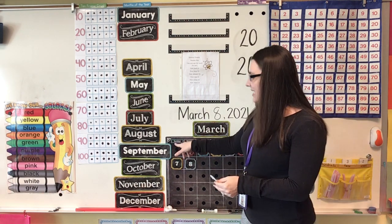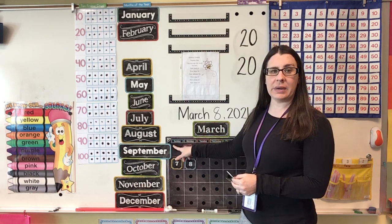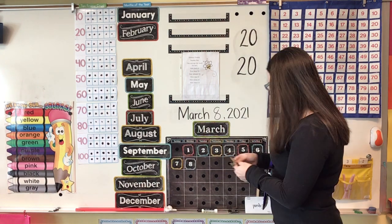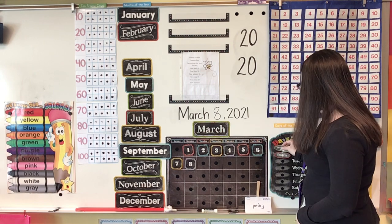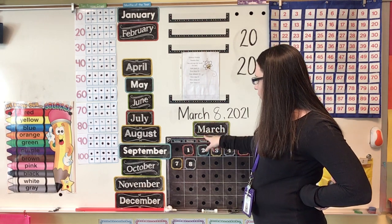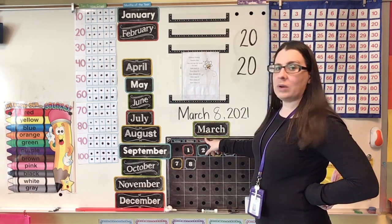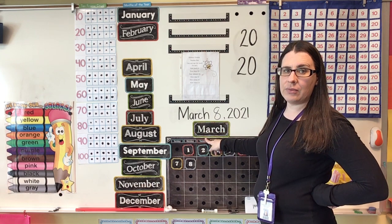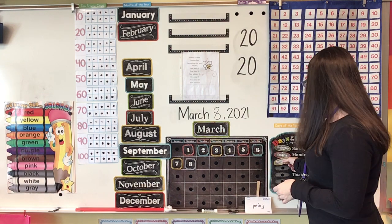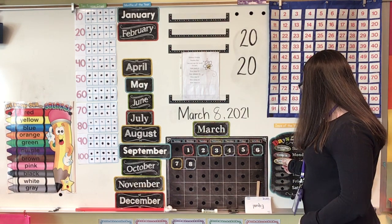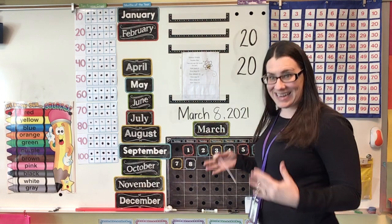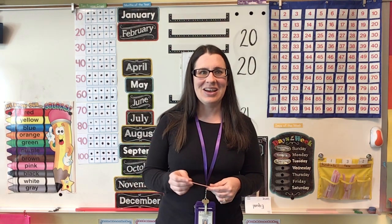What was yesterday? What day comes right before Monday? Sunday. So yesterday was Sunday. And if we hop forward from Monday, what's next? What is tomorrow? Tuesday. Very good. So yesterday was Sunday, today is Monday, and tomorrow will be Tuesday.